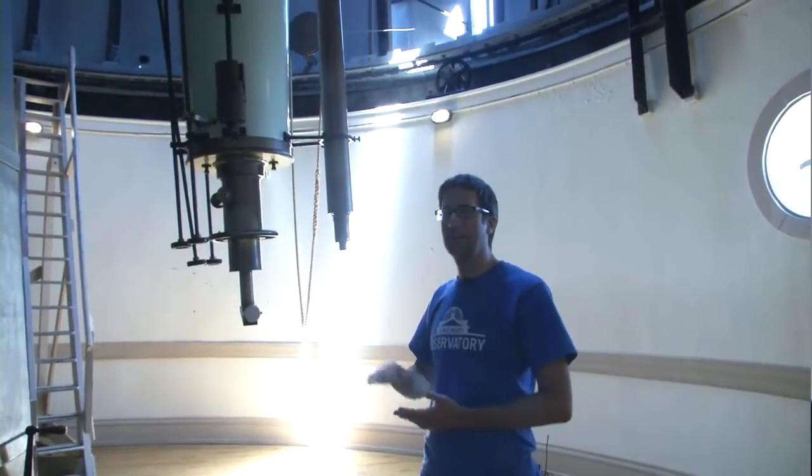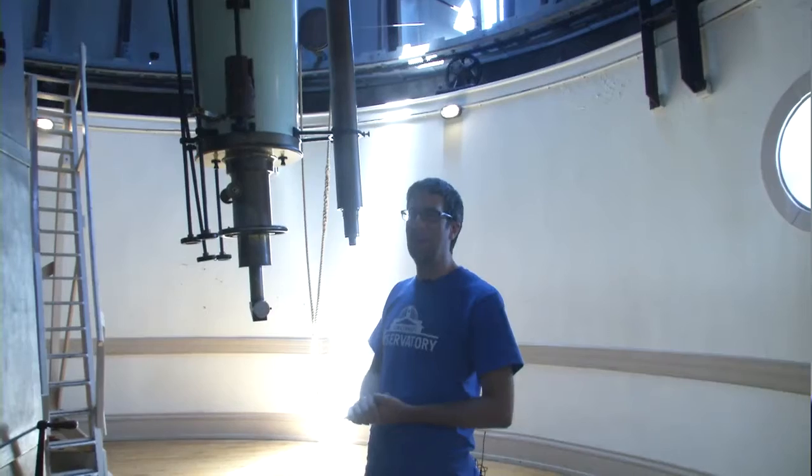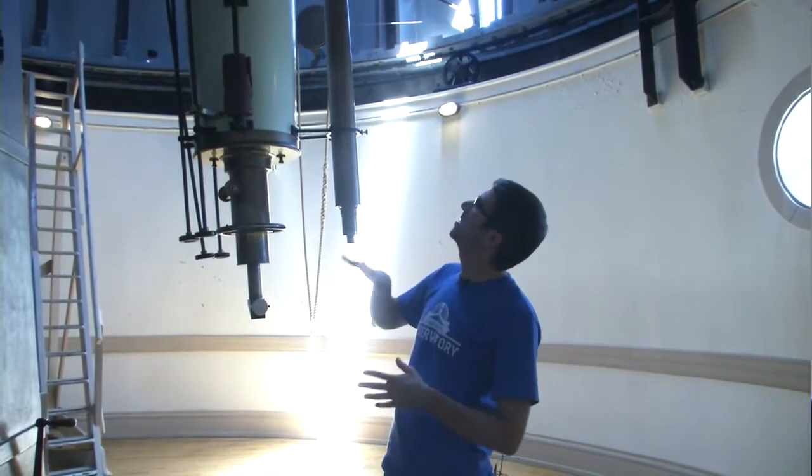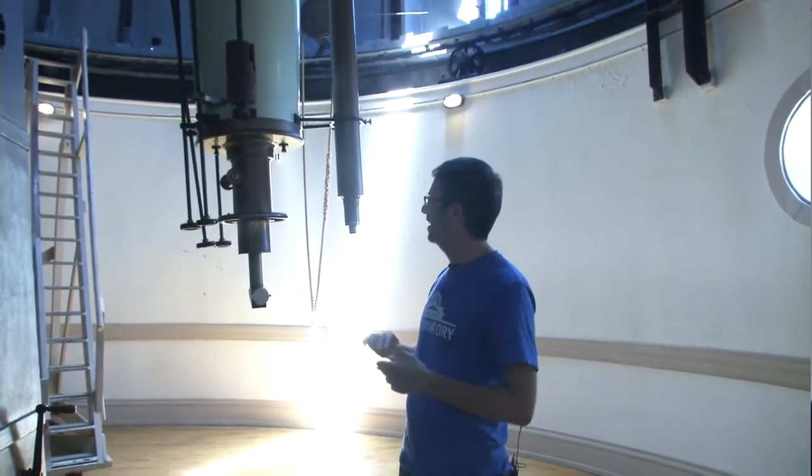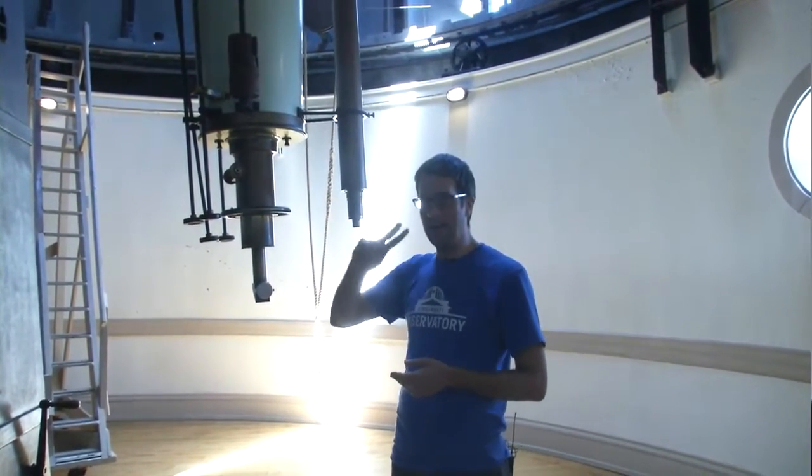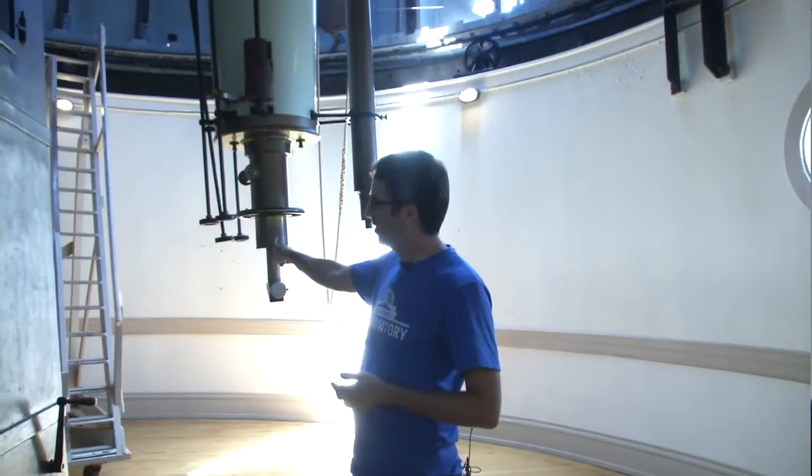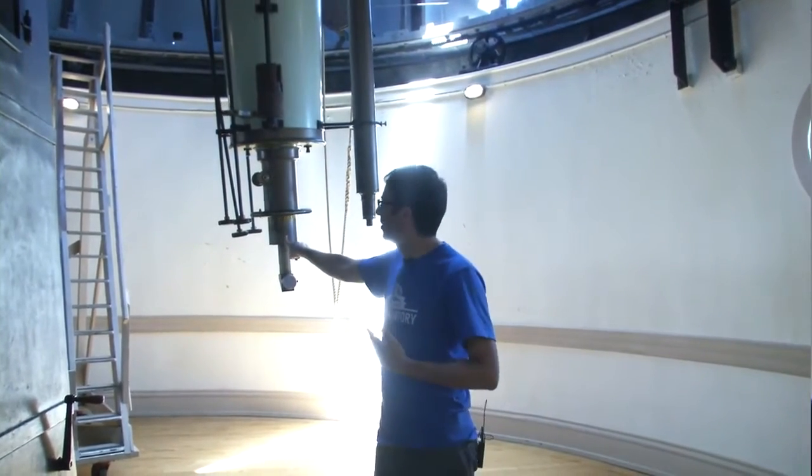This is our newer telescope. It was made in 1904 in Massachusetts and has a lens that's 16 inches across at the top. The tube is 22 feet long and is pretty easy to move. I can move this with one finger, and this is how we aim it up in the sky.